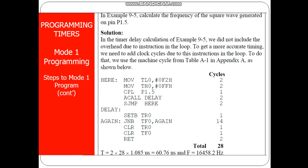The delay program is written. The SETB TL0 instruction takes one machine cycle. The next instruction, JNB TF0, takes one machine cycle. You can see that this instruction gets executed 14 times. The TH and TL value is FF F2. For every clock pulse received, the value is incremented by 1, and once there is an overflow, it comes out of the loop. So this particular instruction JNB TF0 gets executed 14 times, hence the number of machine cycles required is 14.